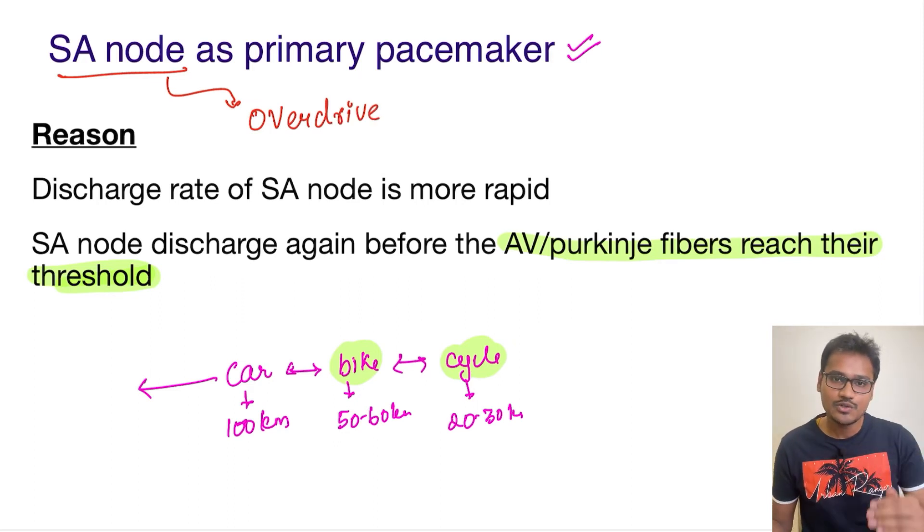As and when the SA node goes down, what will happen is the AV node can make the heart or the ventricles beat at their intrinsic rate, which is around 50 to 60 beats per minute. And if the AV node fails, then the Purkinje fibers can fire at around 20 to 40 beats per minute.